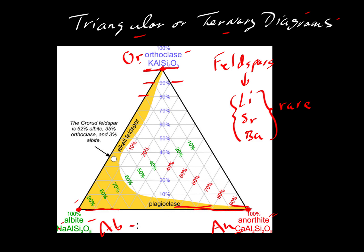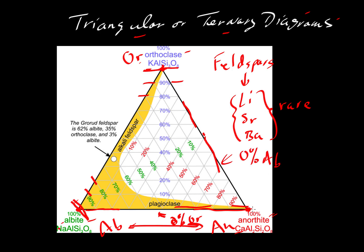This line — the albite-anorthite join — is the case where we have zero percent orthoclase. We do the same kind of contouring relative to albite: here is a hundred percent albite, then a ninety percent contour, an eighty percent contour, going all the way down to the orthoclase-anorthite join, which is a line where we have zero percent albite. Then we do the same contouring for anorthite: a hundred percent, then ninety, eighty, seventy, until we get to zero percent.